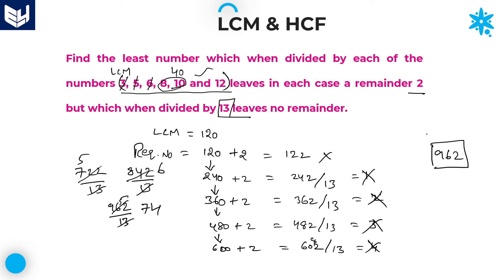962 is the least number which when divided by all these numbers leaves a remainder of 2, but when divided by 13 there is no remainder. This is the required answer. For these kinds of problems, whenever the problem is related to this model, use the option verification method. Option verification is the simplest method, because writing all multiples of 120 is a time-consuming process. So it is better to go with option verification, especially for this model.